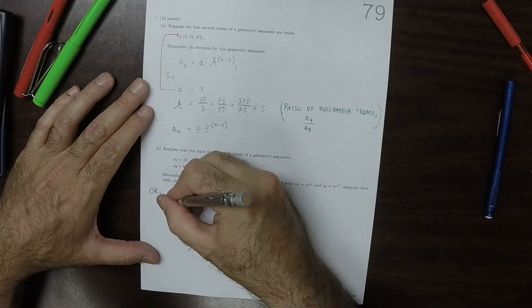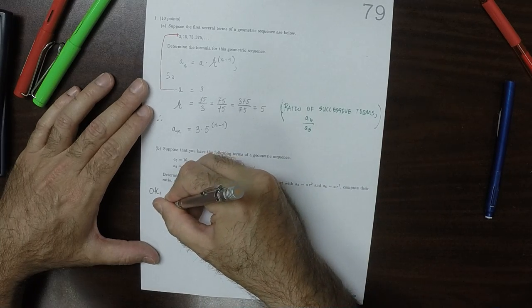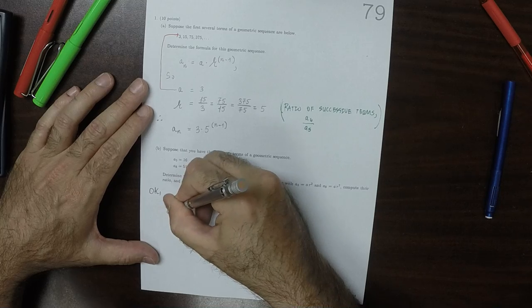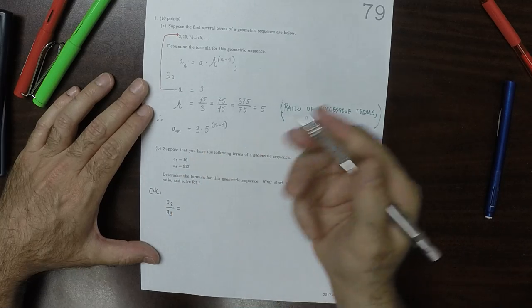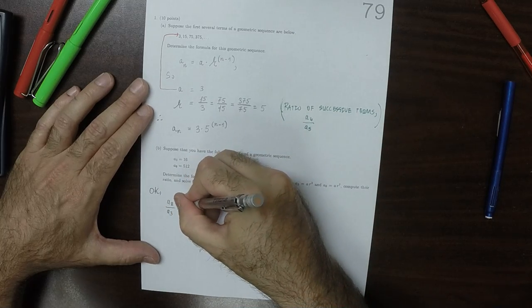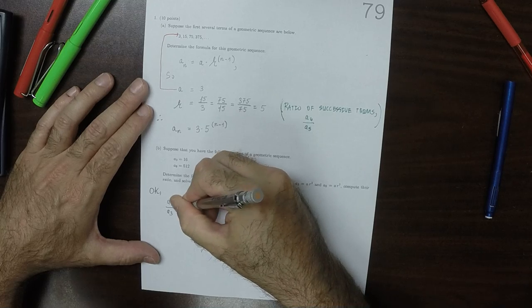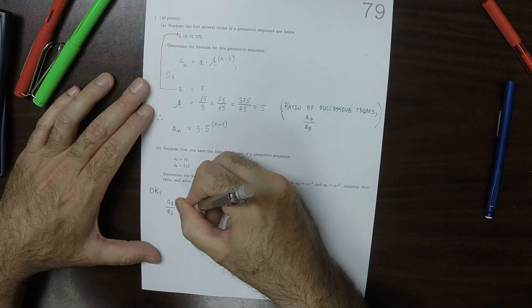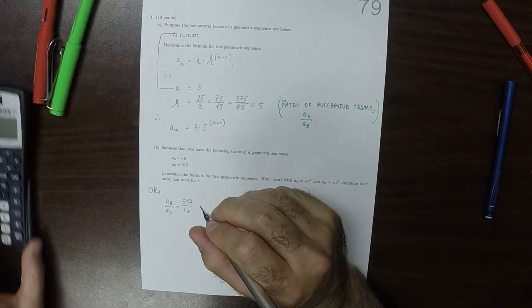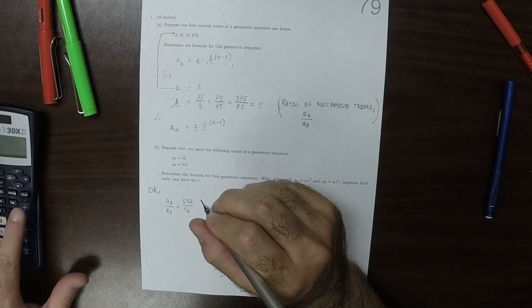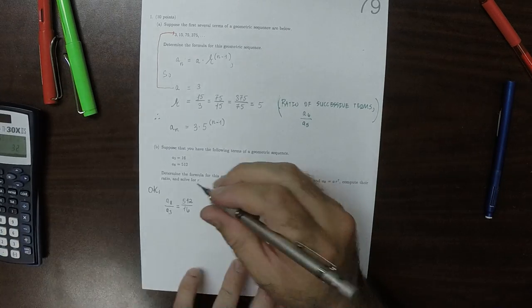So a_8 divided by a_3, on the one hand, because of what we're given, is 512 divided by 16. And 512 divided by 16 is 32.